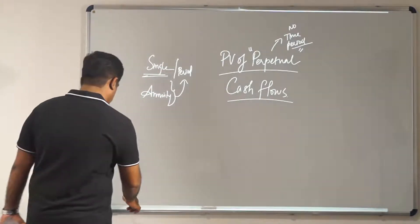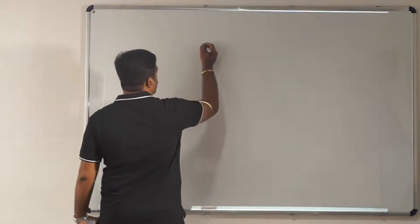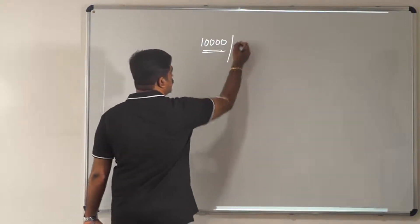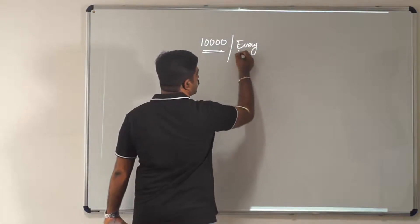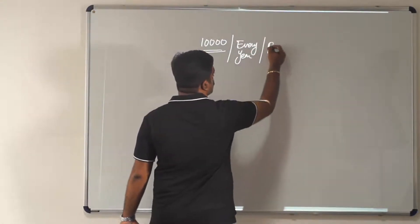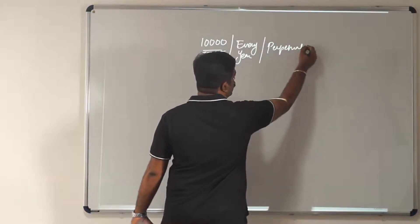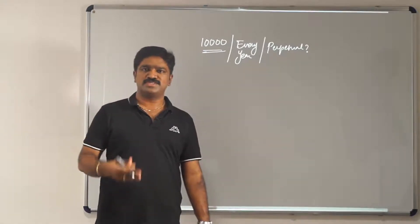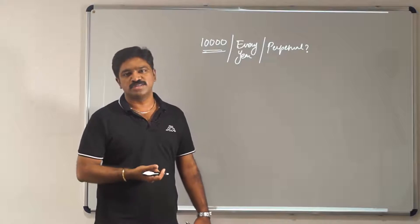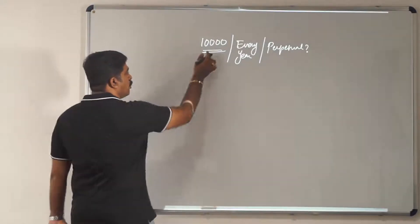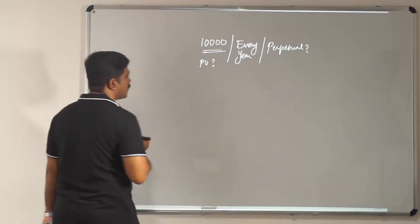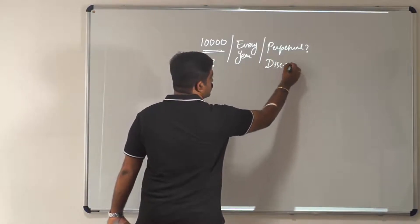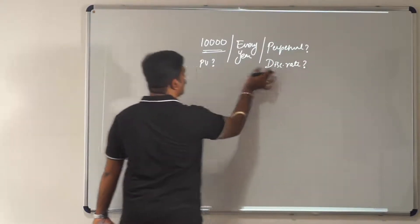Let me give an example. Let's say you are going to receive 10,000 every year, and it is perpetual. How do you find out the present value of this 10,000 when you will receive it this year, next year, and it goes on for another hundred or thousand years? How do you know what the present value is?